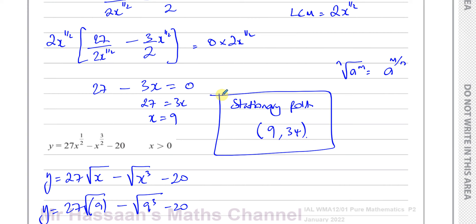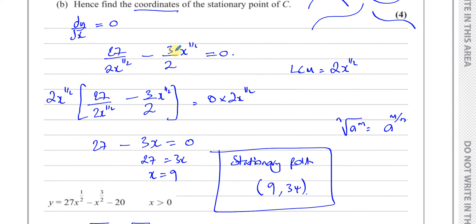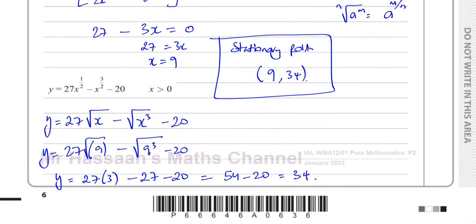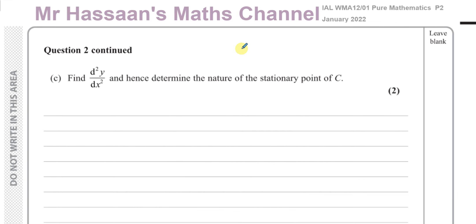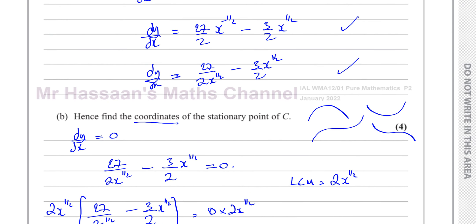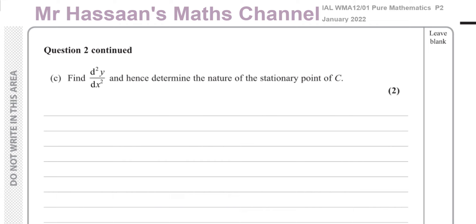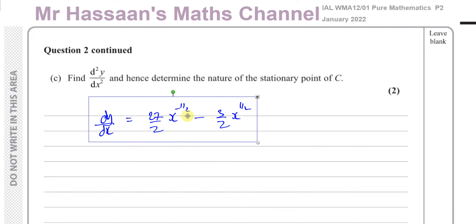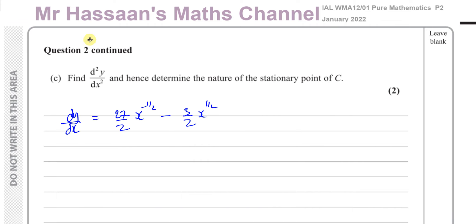That's the answer to part B. Now for part C: find d²y/dx² and hence determine the nature of the stationary point. We take the first differential — dy/dx equals 27 over 2 times x to the power of negative a half, minus 3 over 2 times x to the power of a half — and differentiate it a second time.